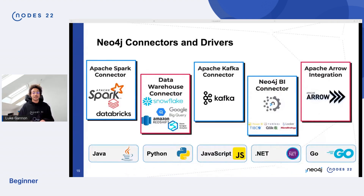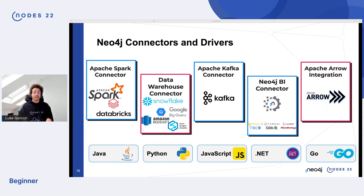In terms of connectors and drivers, we have our native Python client driver, and we've also added the data warehouse connector so you can get data to and from Neo4j from things like Snowflake, BigQuery, Redshift, or Synapse. We also have Apache Arrow integration, available with Graph Data Science Enterprise Edition, allowing you to move lots of high-dimensionality node embeddings really fast over the network.